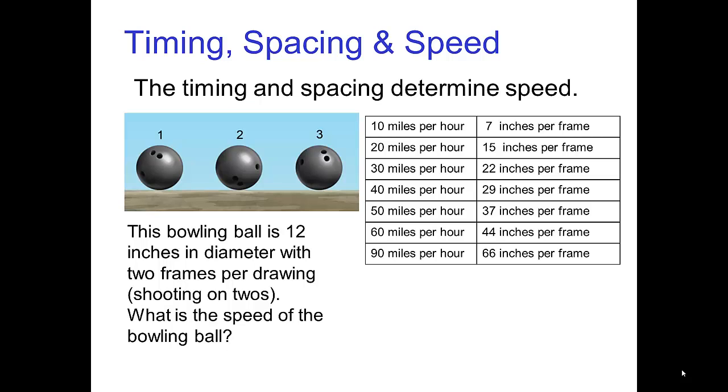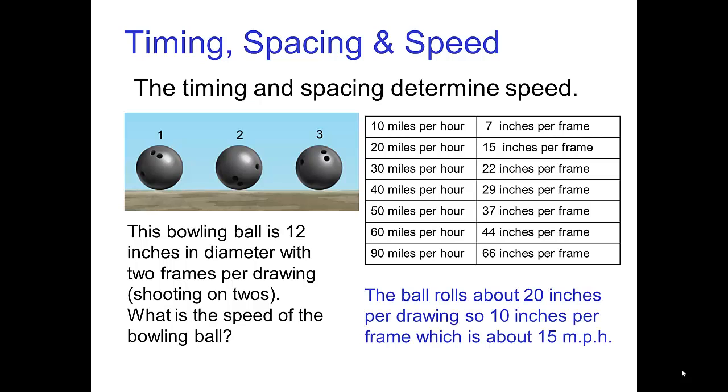Let's look at an example. This bowling ball is 12 inches in diameter with two frames per drawing, that is, shooting on twos. So what is the speed of the bowling ball? Well, the ball rolls about 20 inches per drawing, so 10 inches per frame. That in the table is about 15 miles per hour.